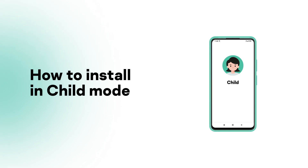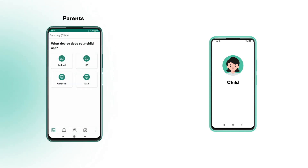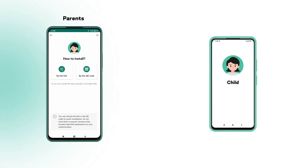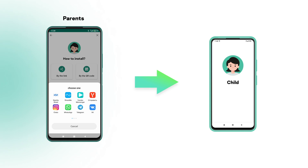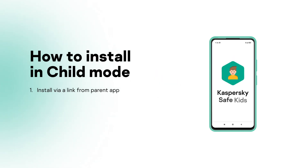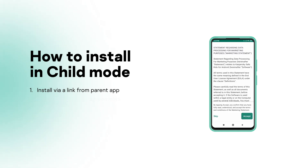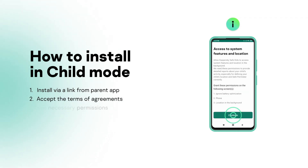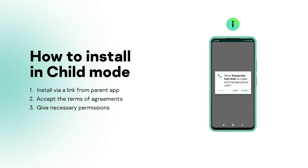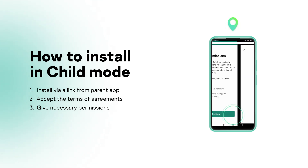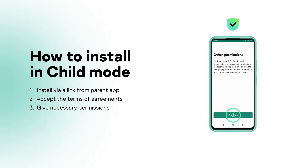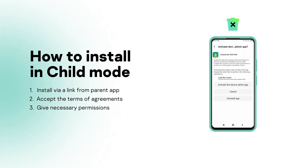Now, let's install Kaspersky Safe Kids on your child's devices. For easy installation, you can send to your child's mobile a download link that includes their profile data. After you have installed the app on your child's device, accept the marketing statement and grant the necessary permissions. They are required to track and show your child's location, apply protection rules you set, and guard against the app being accidentally uninstalled.